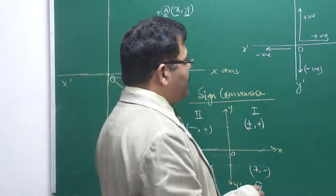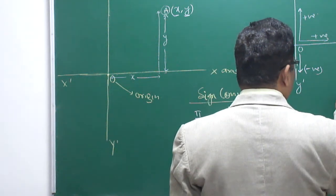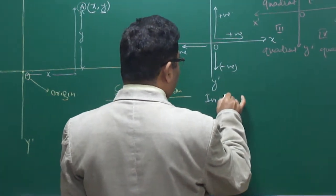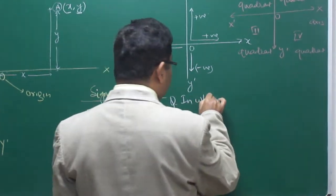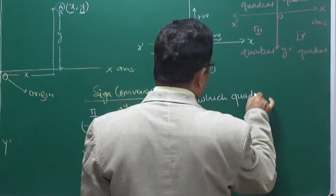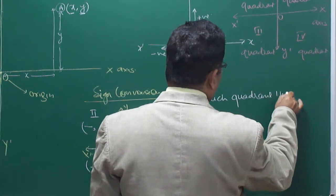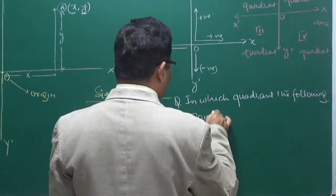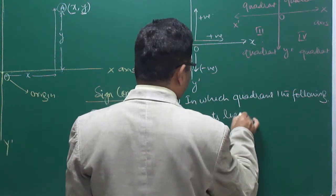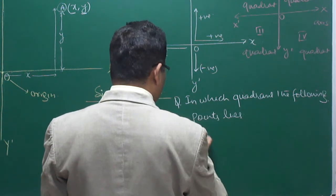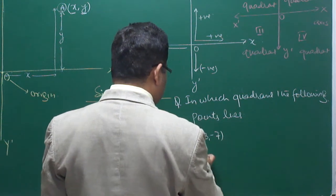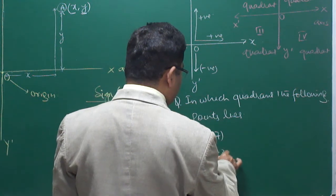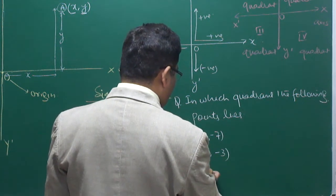Let me discuss a few questions. In which quadrant do the following points lie? First question: (3, −7). Second question: (−4, −3). Third question: (−7, 8).